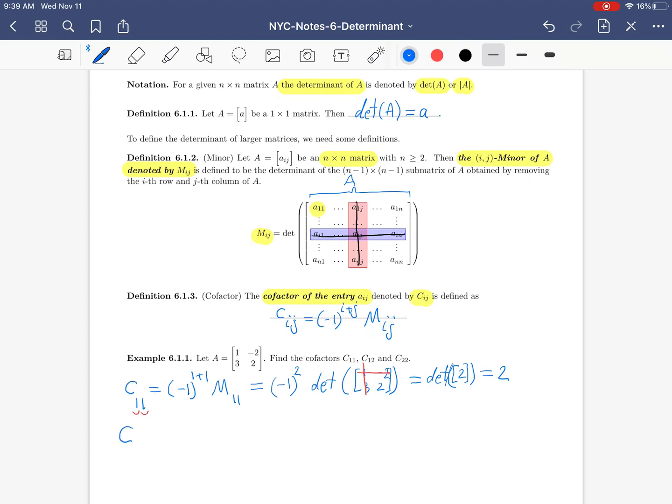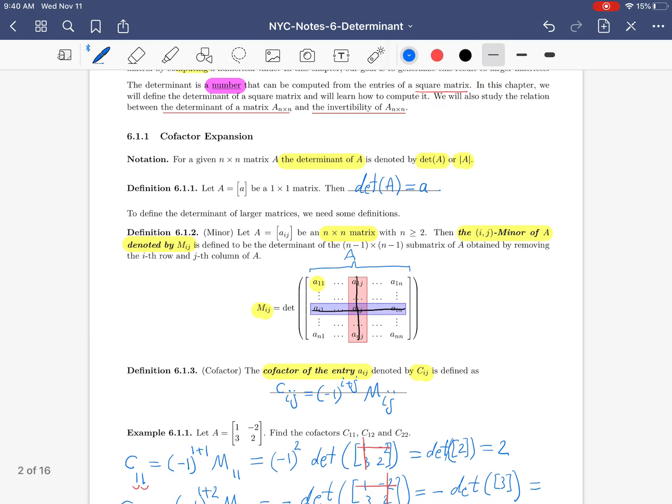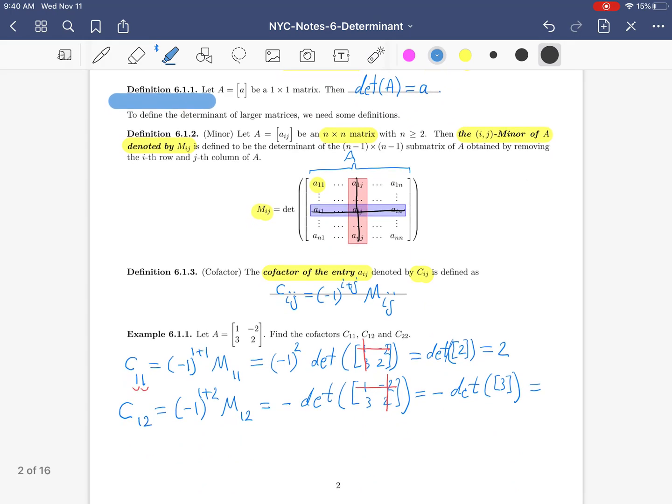Let's compute C_12. So minus 1 to the 1 plus 2 times M_12. That is minus the determinant of, again we have to copy the whole matrix, and then we have to remove the first row and the second column. So we end up with minus the determinant of 3. When you have a determinant of a 1 by 1 matrix, the answer is just the entry, so minus 3.